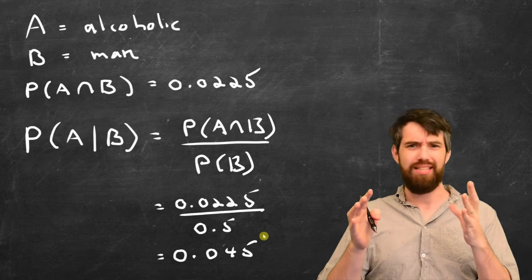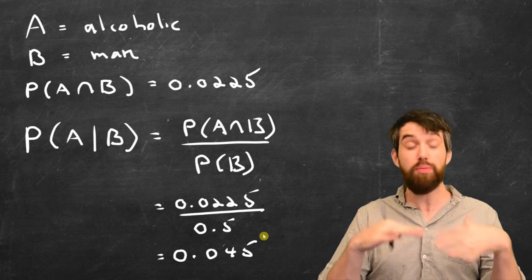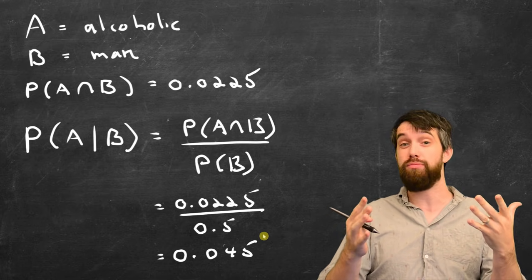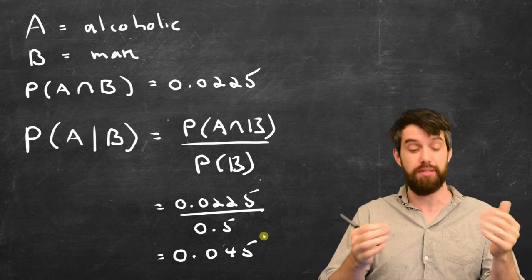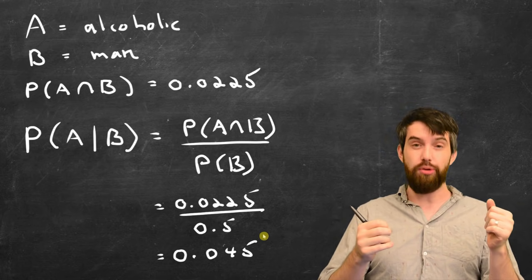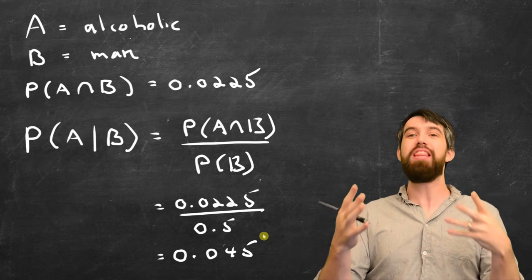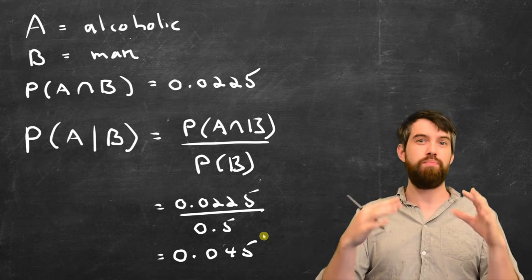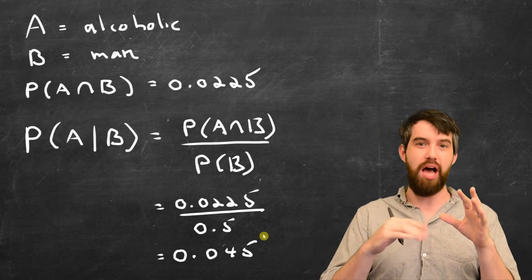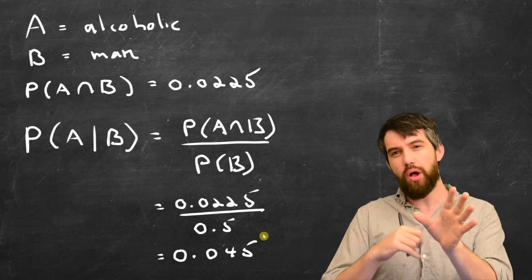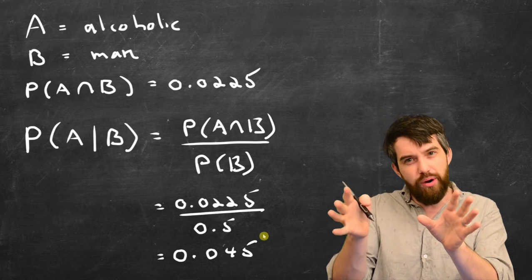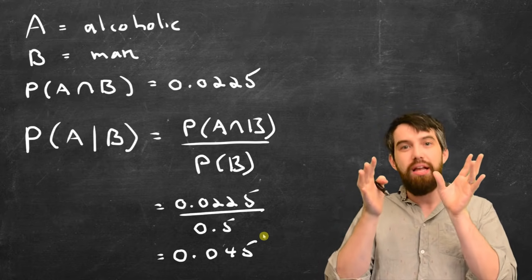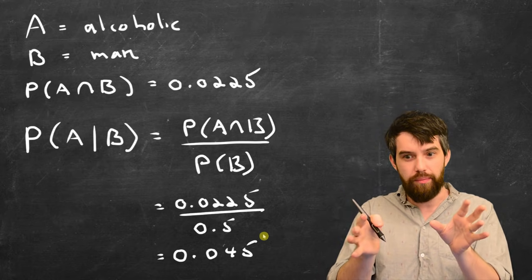By the way, it's a little bit smaller for adult females — about 2.5% for adult females. So this is a way that we've been able to compute the probability of being an alcoholic given that you're a male, via this technique of conditional probability.